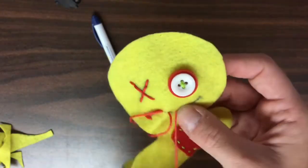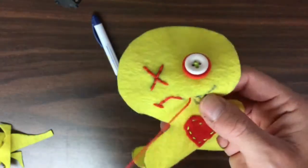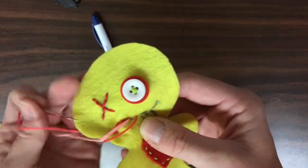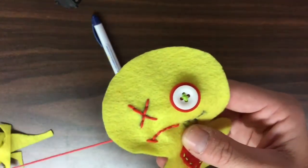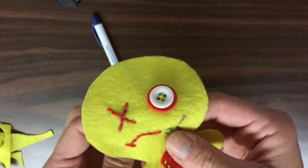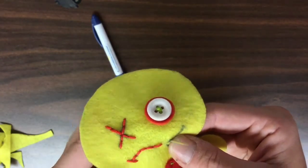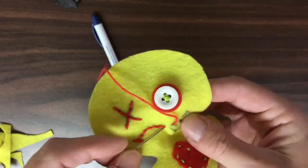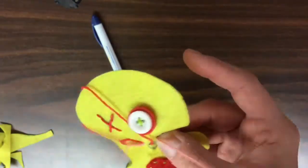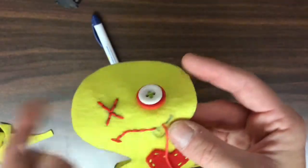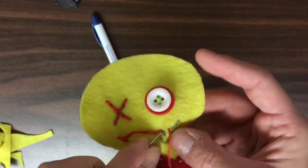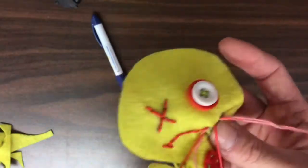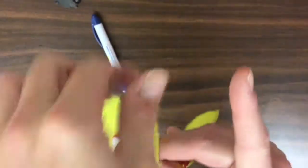Since I made the line so squiggly, I'm taking kind of smaller stitches than if it was a straight line. Going back and forth so that way I have a solid line for the mouth.